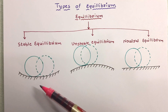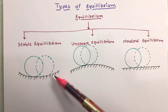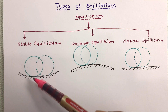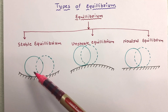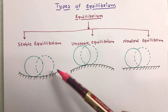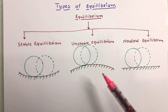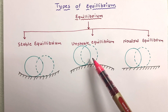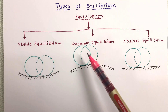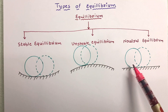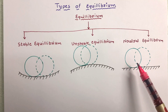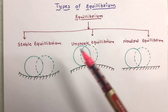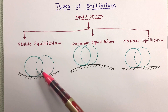Here in this figure, we can see a sphere lying on a surface which is concave in nature. If this sphere is displaced slightly from its position of rest, it will return to its original position after some movement. In the second case, if this sphere is disturbed from its position of rest, it cannot come back to its original position. And in the third case, if this sphere is slightly displaced from its position, it will occupy a new position after that slight displacement. So here, the sphere comes back to its original position after getting some displacement.